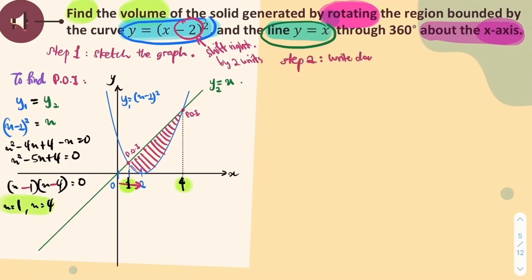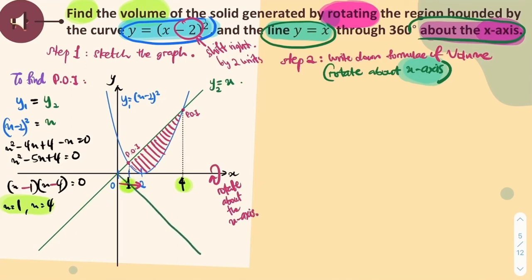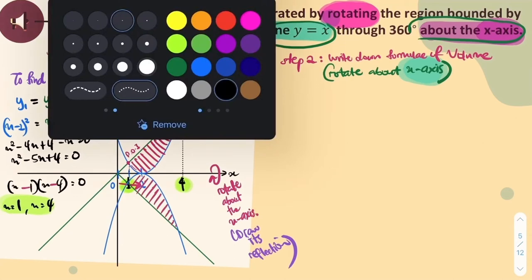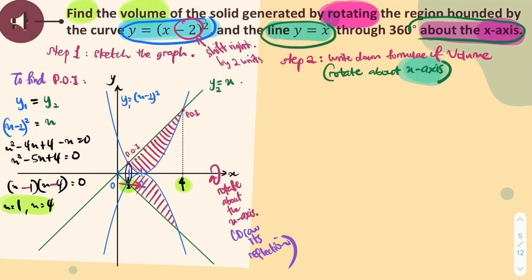Now, step 2: Write down the formula of the volume where the graph is rotated about the x-axis. Remember, rotate about the x-axis just means having a reflection of the original graph. What I did is just finding its reflection. I also draw a circular shape there for both ends to represent that a volume will have a 3D shape.